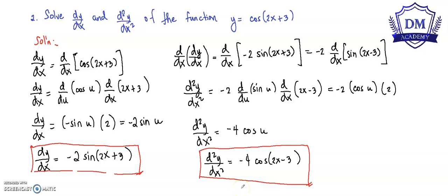A correction: in the second derivative calculation, the argument should be 2x plus 3 throughout, not 2x minus 3. So the final answer for the second differentiation is negative 4 cosine of 2x plus 3. Thank you for watching.